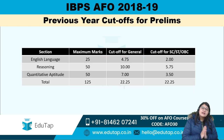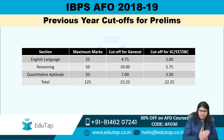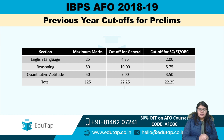Regarding the previous year cutoffs — looking at them gives you an idea of the trend. Let's concentrate on the prelims cutoff of 2018-19. For the general category, English Language out of 25 had a cutoff of 4.75; for SC/ST and OBC it was 2. For Reasoning out of 50, the cutoff was 10 for general and 5.75 for SC/ST/OBC. For Quantitative Aptitude out of 50, the cutoff was 7 for general and 3.50 for SC/ST/OBC.